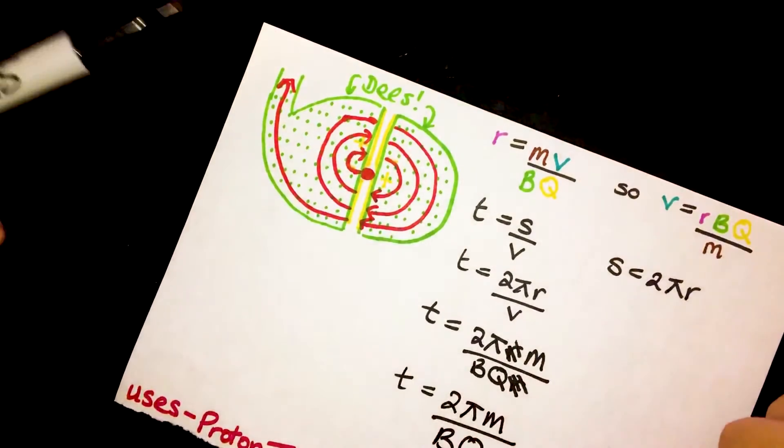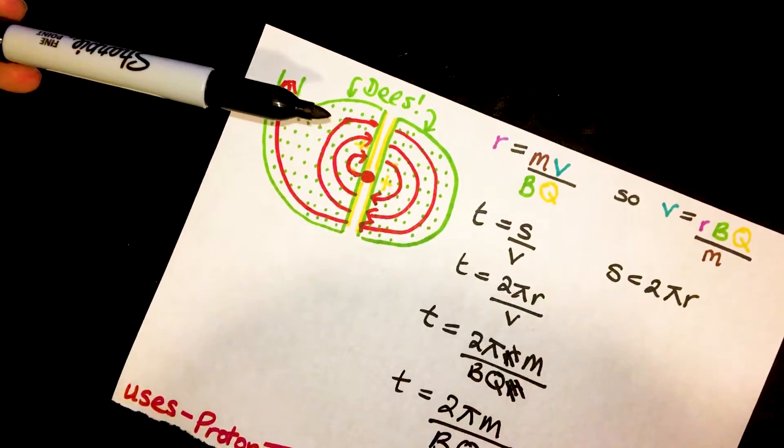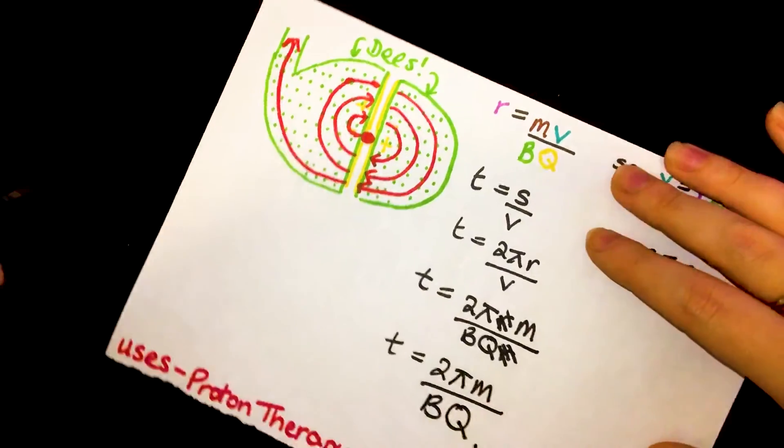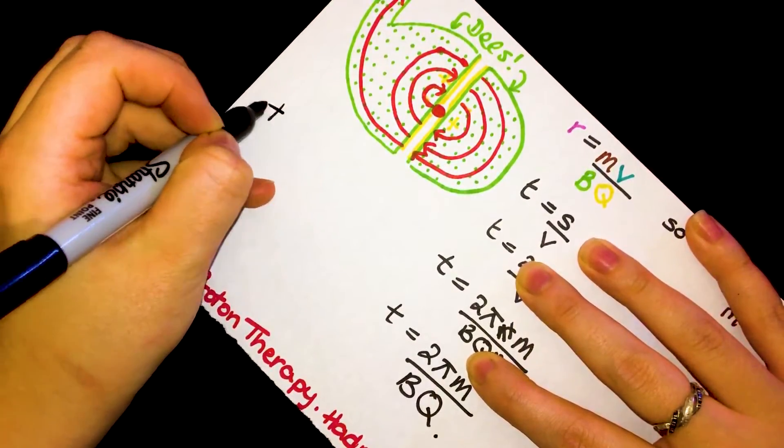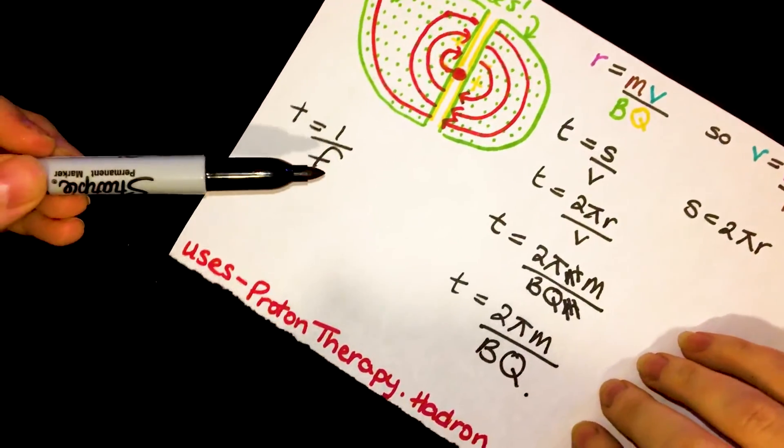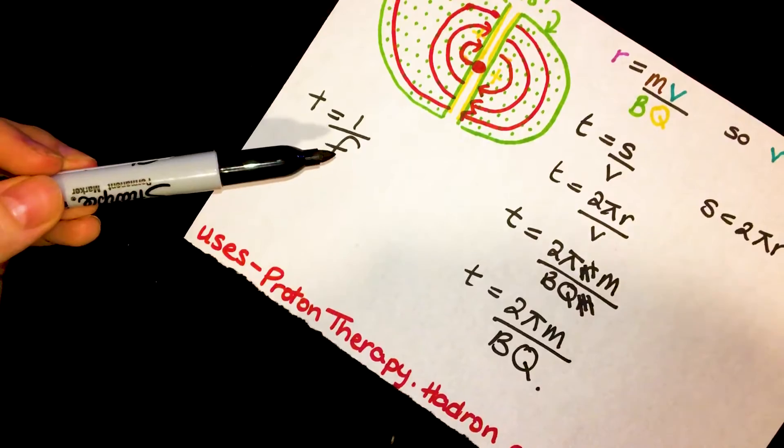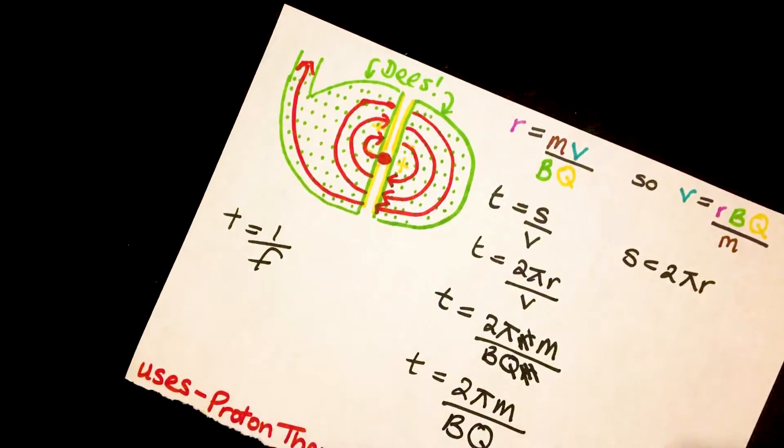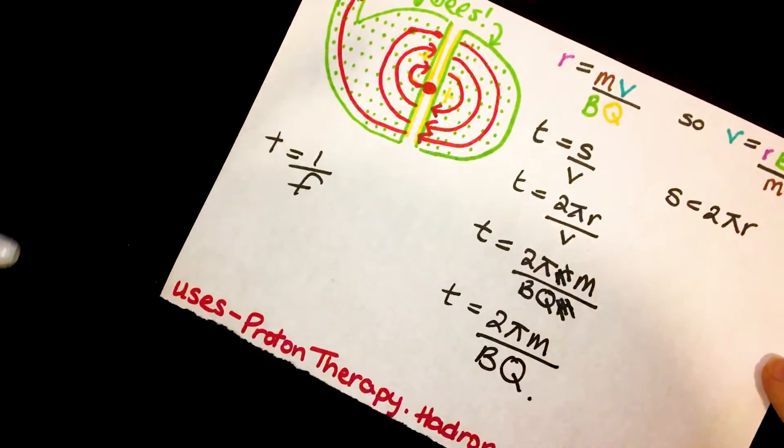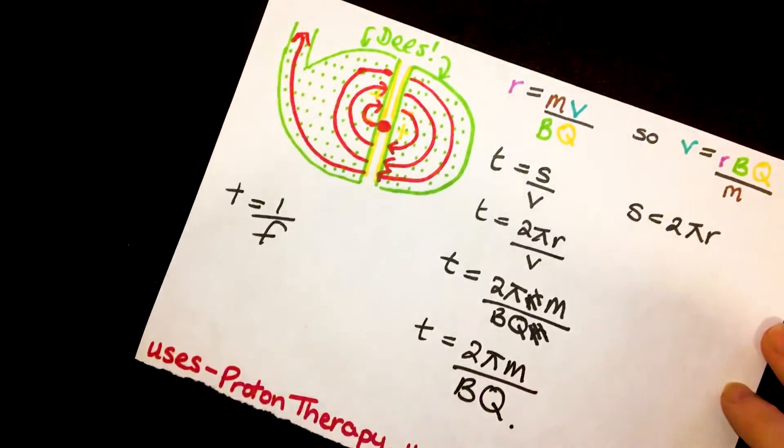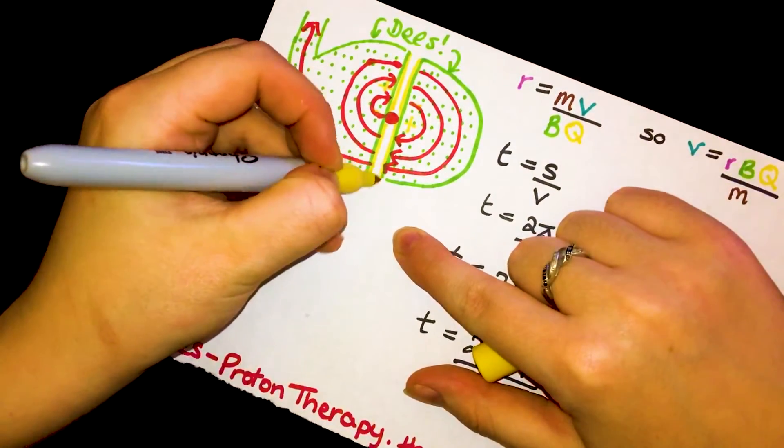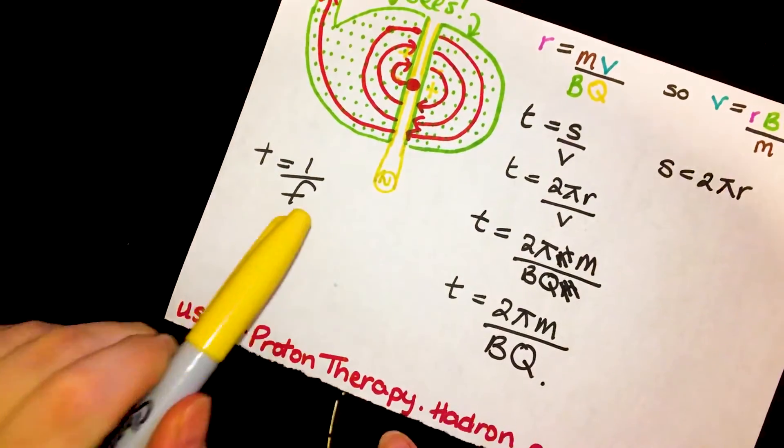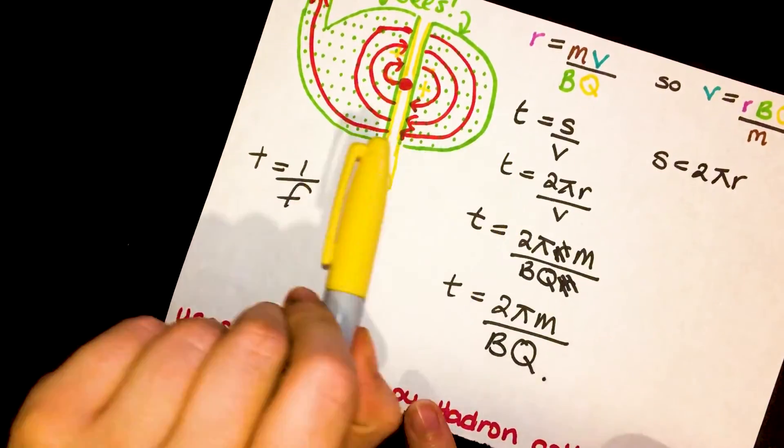That is really almost counterintuitive to your mind, you think it's got to travel further, so surely it's going to take more time to do so, but it's going to be travelling faster, so it kind of counteracts this. So we can now use T is 1 over F to match this time period to the frequency in order to make the frequency that these charges need to flip match the frequency that the protons are going to be crossing that gap. So we can cause our alternating current here to match the frequency in which we need that proton to be crossing that gap.